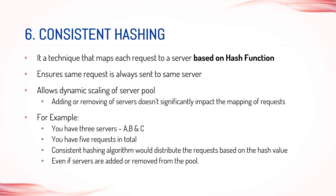7. Consistent Hashing. Consistent Hashing is a technique that maps each request to a server based on a hash function that ensures that the same request is always sent to the same server. It allows for dynamic scaling of the server pool, as adding or removing servers doesn't significantly impact the mapping of requests. For example, if you have three servers A, B, and C and you receive five requests in total, the consistent hashing algorithm would distribute the requests based on the hash value of the request, ensuring that the same request always goes to the same server, even if a server is added or removed from the pool.